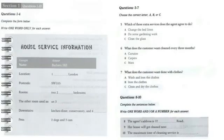Now turn to Section 1. You will hear a conversation between an agent from City House Services and a customer who wants to have her house cleaned. First you have some time to look at questions 1 to 4. You will see that there is an example which has been done for you. On this occasion only the conversation relating to this will be played first.